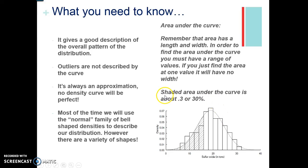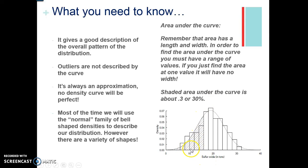The shaded area under the curve shown here is about 30% or 0.3. That's basically saying if this is 100% of the curve and we divide it at the middle, this portion gives us an estimate that it's about 30% of the curve.